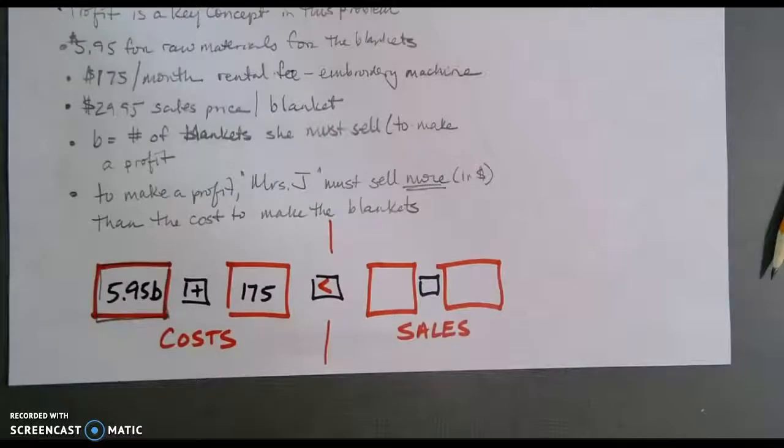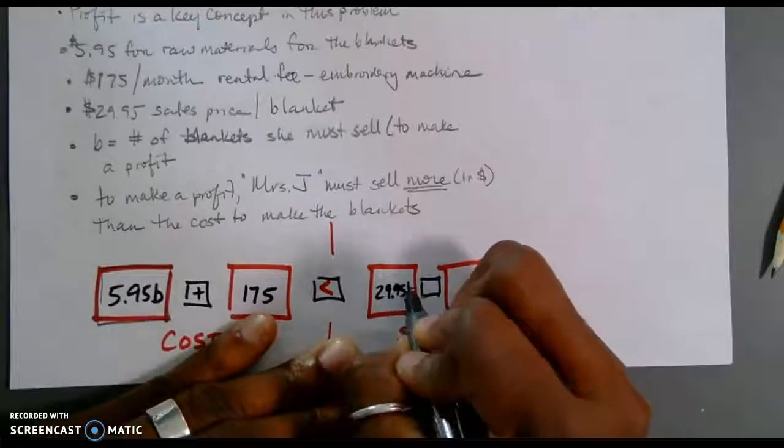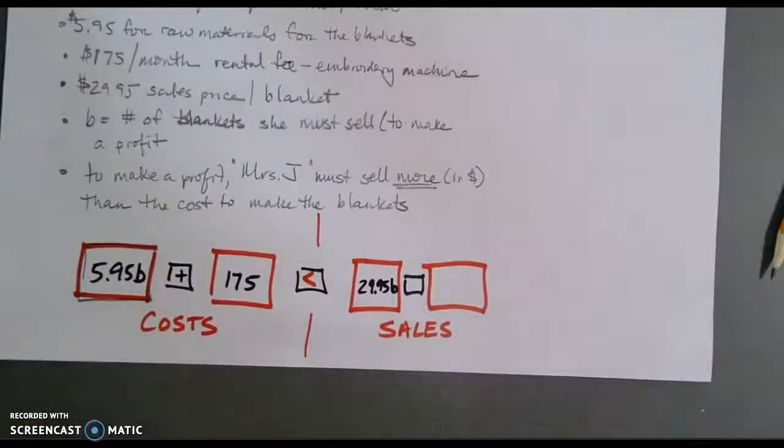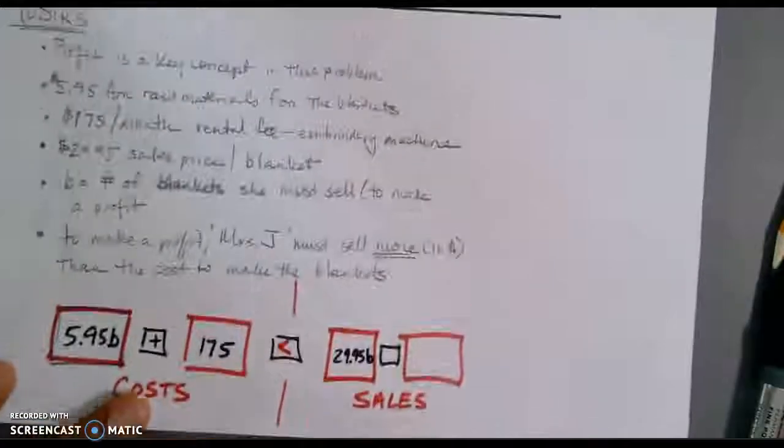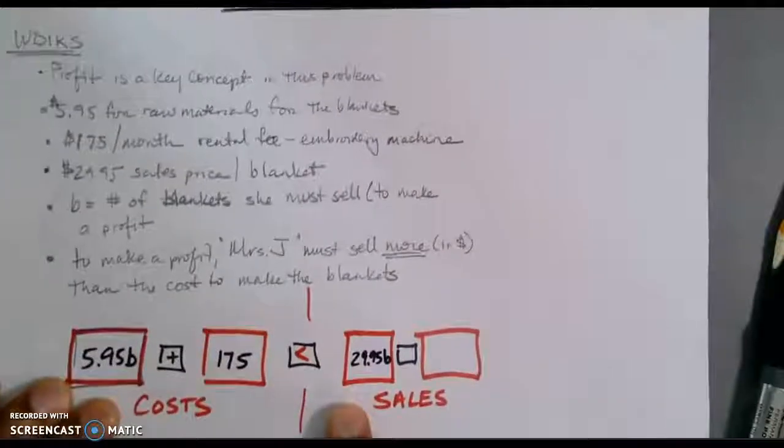The sales price per blanket. So, that's $29.95B. Now, we notice that we have a couple more boxes over here. Let's go through our list. Normally, the what do I know will correspond to what's down here.